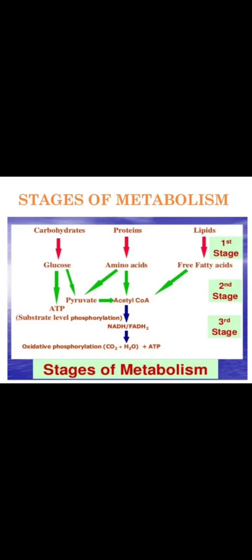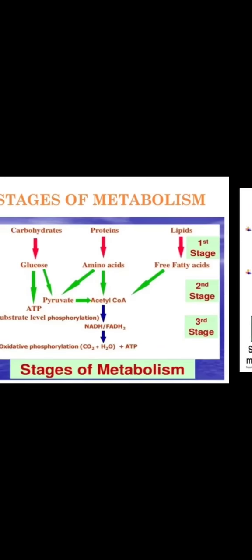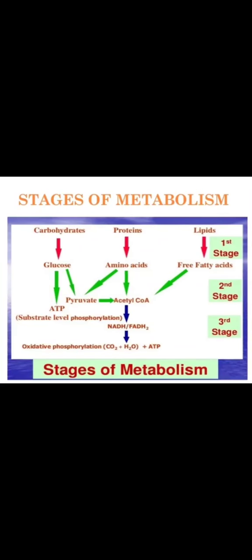So these stages of metabolism are stage 1, stage 2, and stage 3. Carbohydrates, proteins, and lipids enter the stages, and from the final stage 3 we get the final products: carbon dioxide, water, and energy.